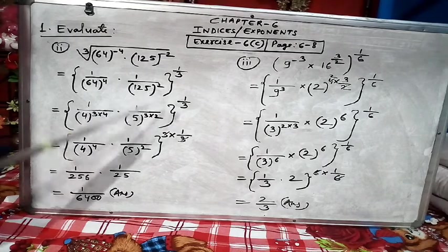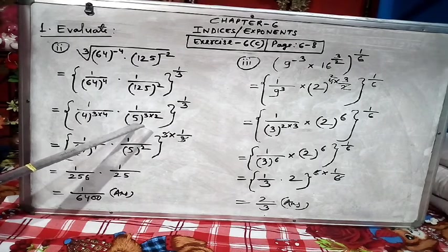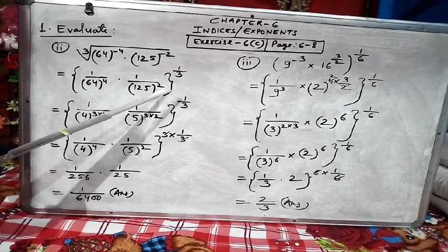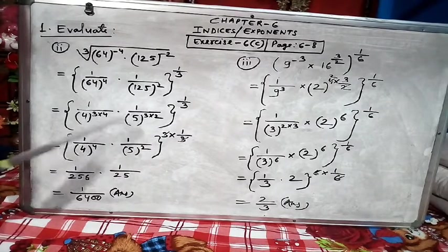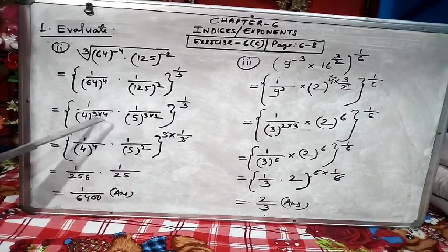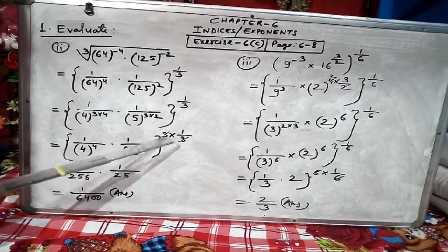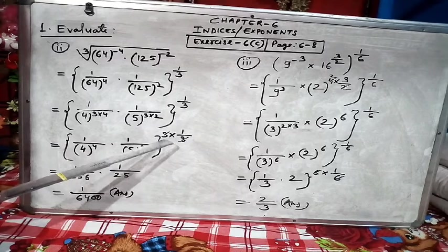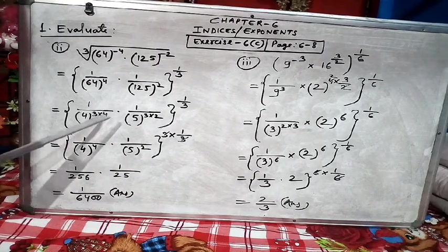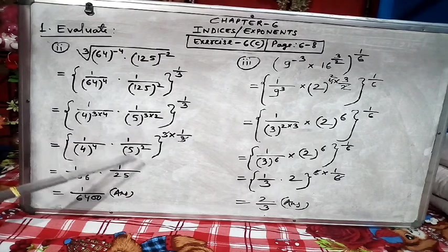And 125 is cube of 5, so I wrote 5^3 and this 2 came here. Now you can see here also we have 3, here also we have 3. So this 3 I will take common and bring outside. Both 3s will come outside, so 4^4 and 5^2 remain inside.